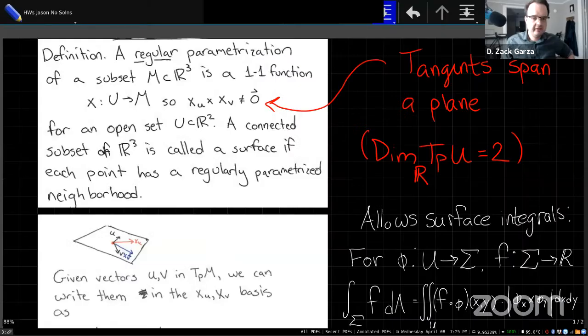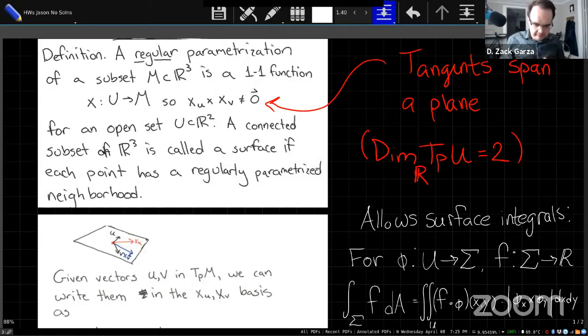I just wanted to give you guys some notes that'll maybe help you get started with the problems. So I will share my screen here. The point of this section is that we're talking about these regular parameterizations of subsets in R³, essentially ways that we can represent them with two coordinates.